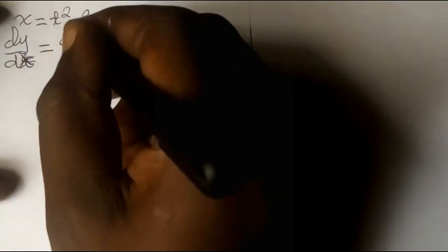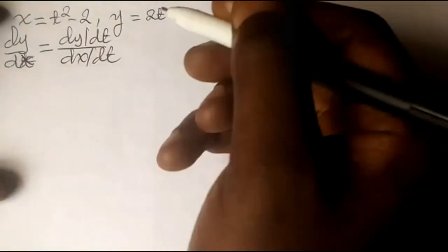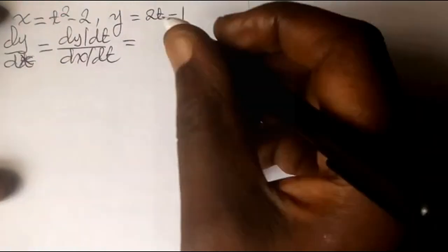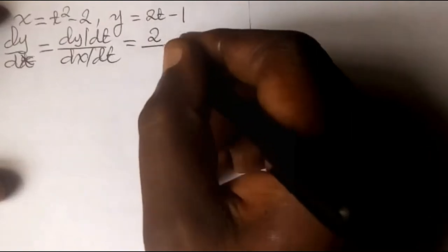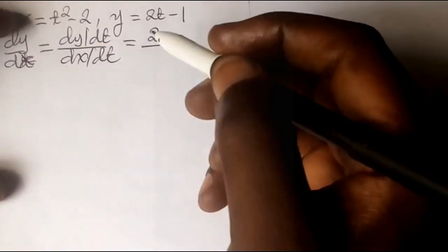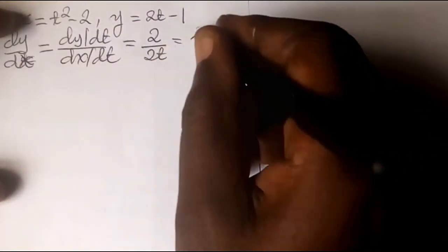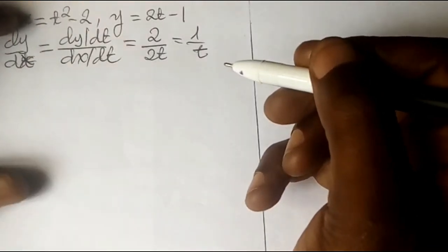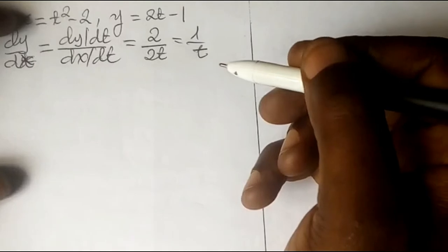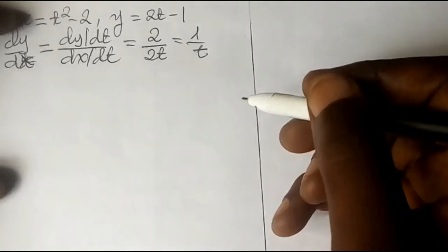Since the curve is given parametrically, dy/dx equals dy/dt over dx/dt. Differentiating y equals 2t minus 1 with respect to t gives 2, and differentiating x equals t squared minus 2 with respect to t gives 2t. So dy/dx equals 2 over 2t, which simplifies to 1 over t. This is the gradient of the curve in terms of the parameter t, and also the gradient of the tangent at the point of contact.